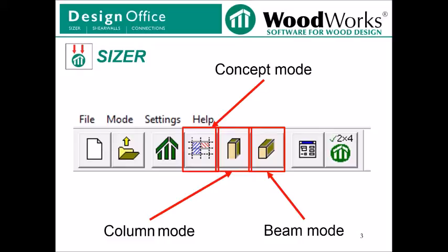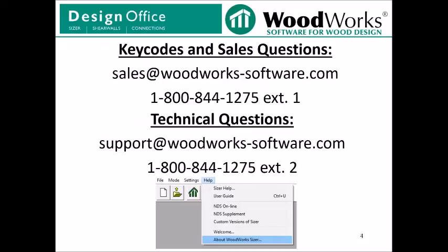Alternatively, if you want to complete the design of a single Beam or Column instead of making a model of your structure, you can navigate directly to Beam or Column Mode and design a member there. Just a reminder that for key codes and sales related questions to please email sales at woodworks-software.com. For technical questions related to the software, please email support at woodworks-software.com. These emails and information can also be found in the Help menu under the About Woodworks Sizer button.